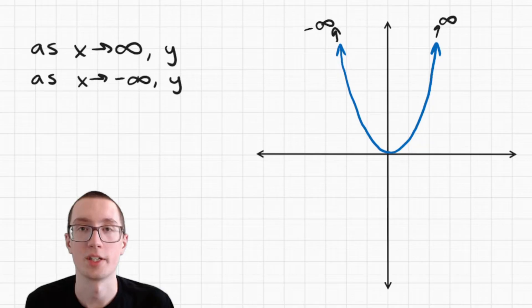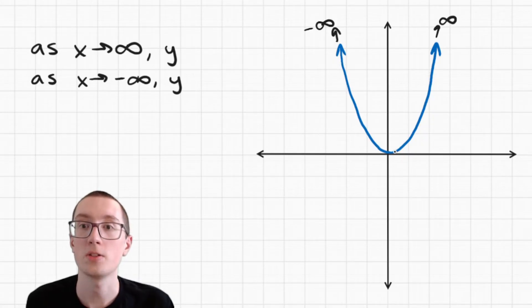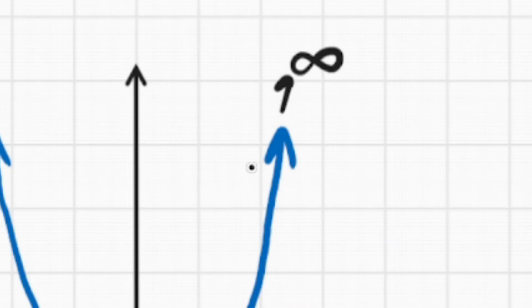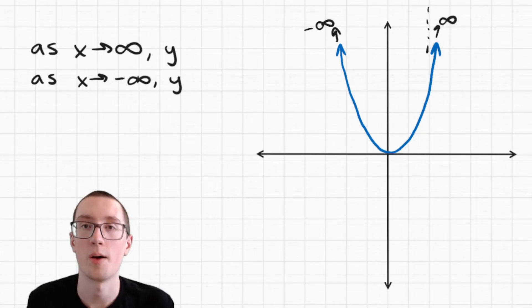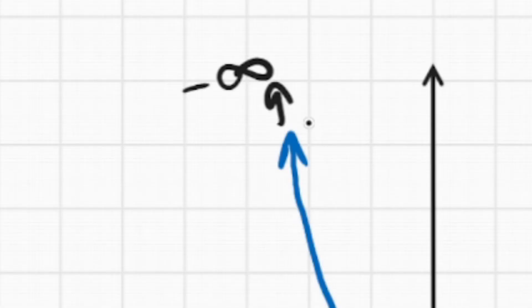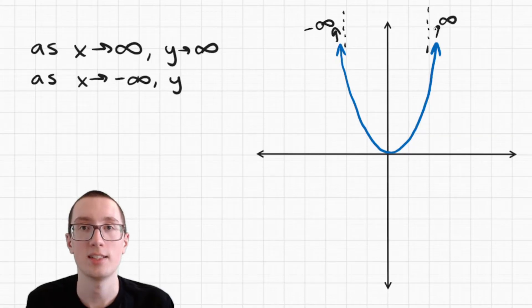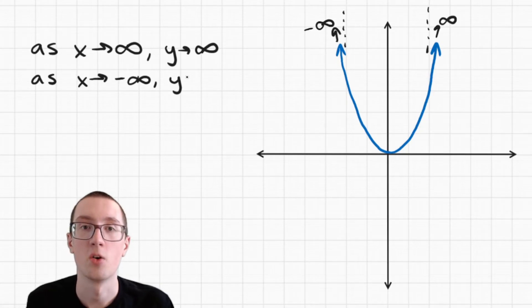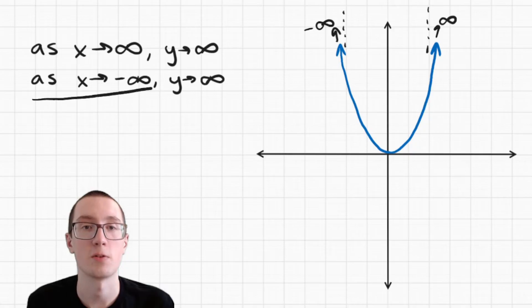So we need to figure out what y is doing in both cases. First, as x approaches infinity — as x goes towards the right — the y value, which is the up and down value, is going up because you can see this graph is going up very fast. So it's going to keep going up until we're out of numbers. As x approaches infinity, y approaches infinity. But what about this side? As x goes to the left, y is still going up, just like the right side. It doesn't matter which way you go — left or right — it's always going to be going up. So as x approaches negative infinity, y is going to approach positive infinity. This is our final end behavior.